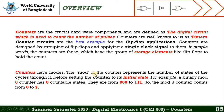Counters have modes. The mode of a counter represents the number of states in the cycle before resetting to its initial state. For example, a binary mode 8 counter has 8 countable states from 000 to 111, so the mode 8 counter counts from 0 to 7.